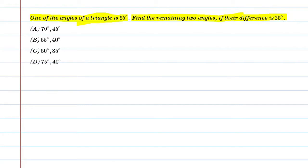So student, basically in the question we have given that one triangle with an angle of 65 degrees and the other two angles differ by 25 degrees. Let's understand the condition of this figure.